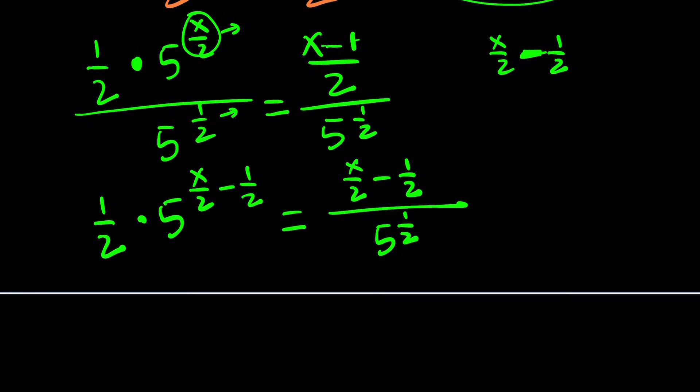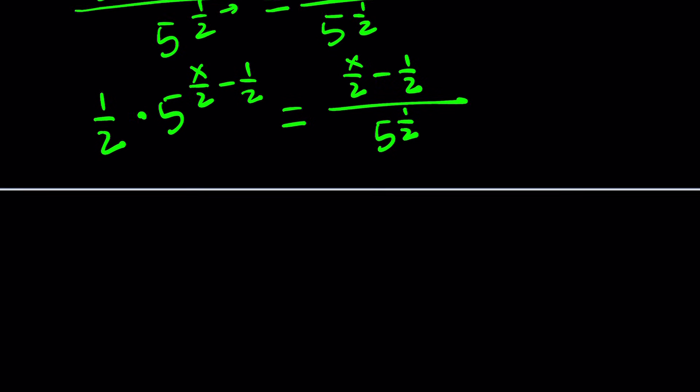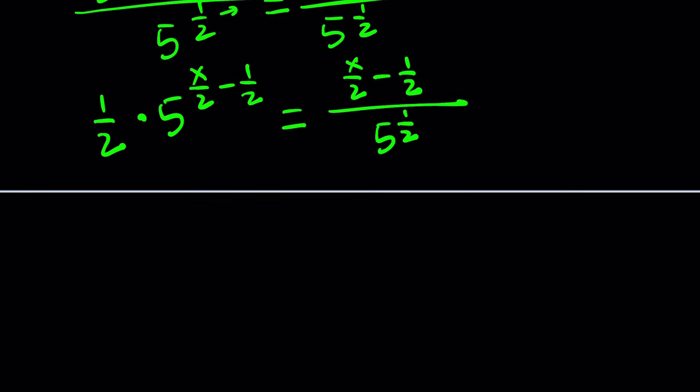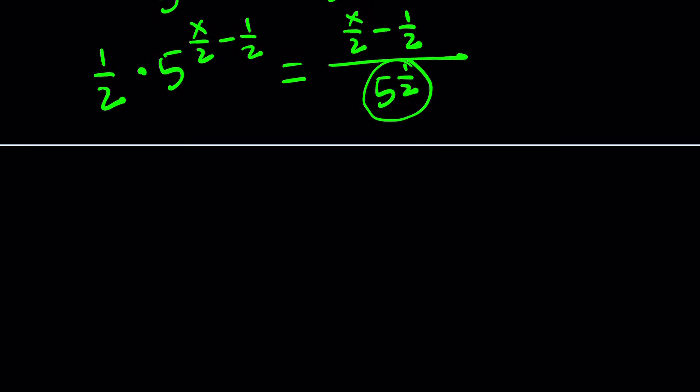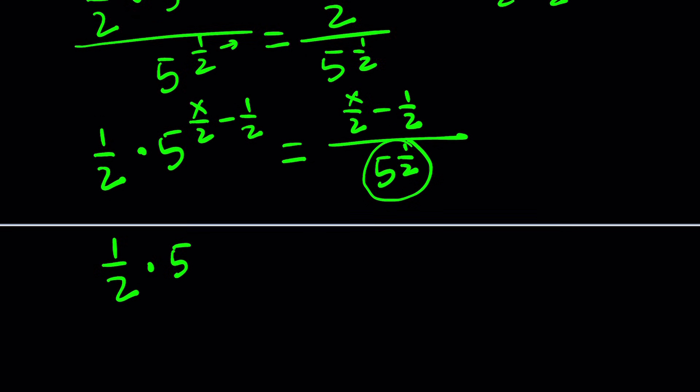So you can go ahead and divide both sides by 5 to the power 1 half. And when you do that, what's going to happen? The exponents will be subtracted. Take a look. This one and this one. You see what I'm talking about? That's going to give you x minus 1 divided by 2. So 1 half is going to be in the front. We're going to get times 5 to the power x over 2 minus 1 half, which is the same as x over 2 minus 1 half divided by 5 to the power 1 half.